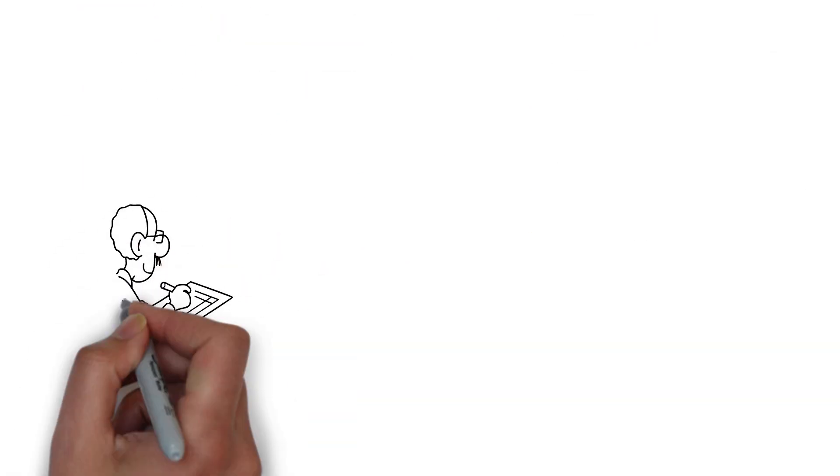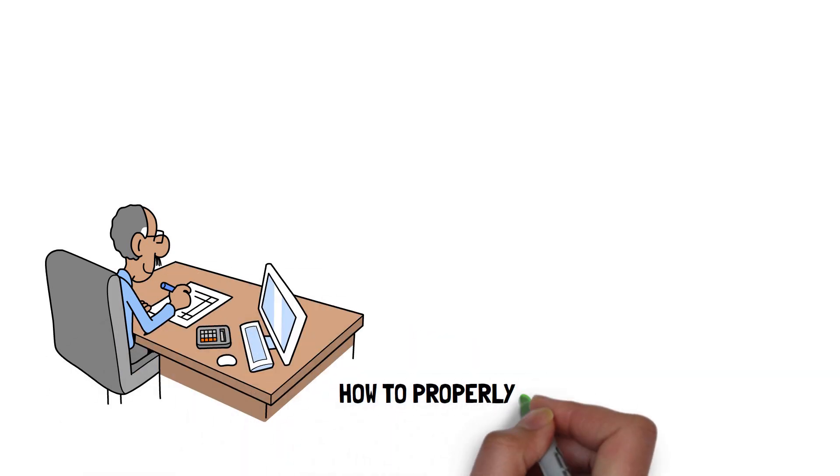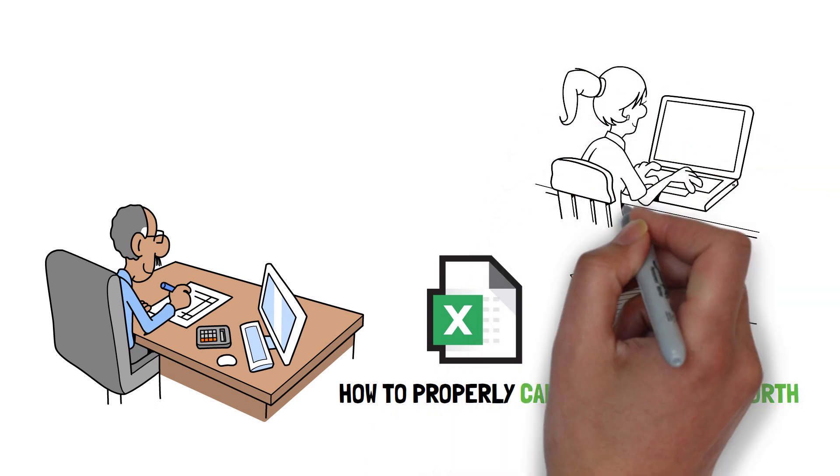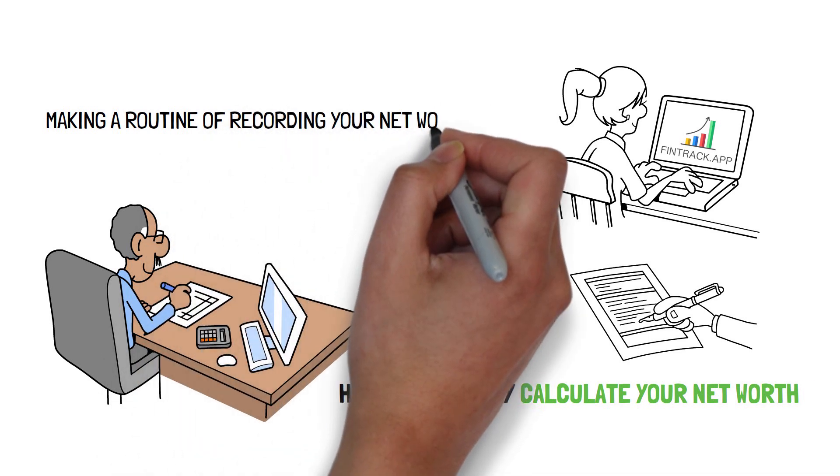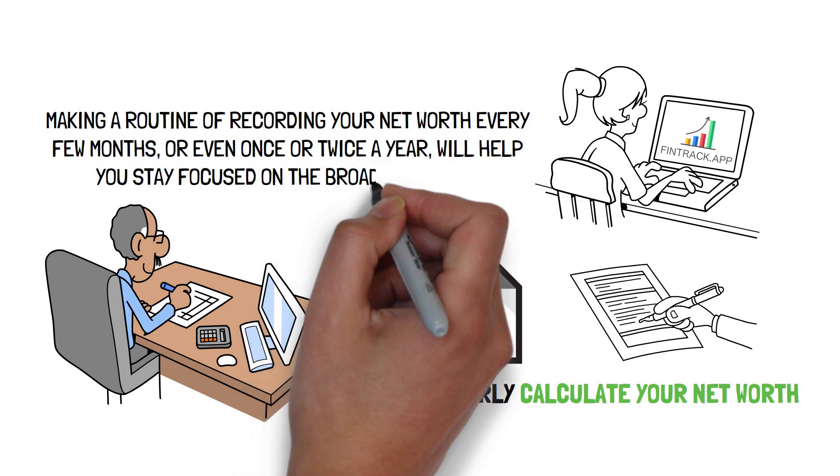You'll be able to track your financial success over time now if you know how to properly calculate your net worth. This can be accomplished using a spreadsheet, pen and paper, or an online net worth tracker. Making a routine of recording your net worth every few months or even once or twice a year will help you stay focused on the broader picture.